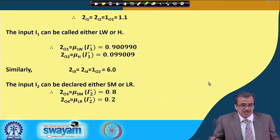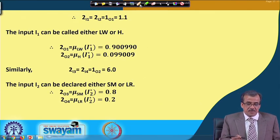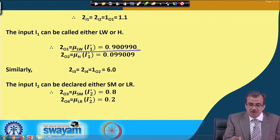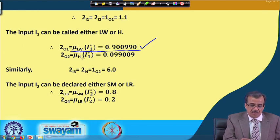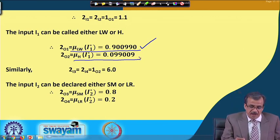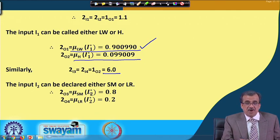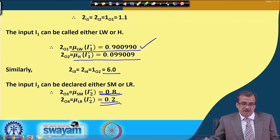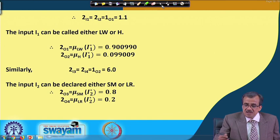If you calculate the membership function values, you will get: corresponding to 'low I1', μ_low(I1*) = 0.900990. Corresponding to I1*, μ_high(I1*) = 0.09009. Similarly, corresponding to the second input I2* = 6.0, μ_small(I2*) = 0.8. Then μ_large(I2*) = 0.2. How to determine those things, we have discussed several times in detail.